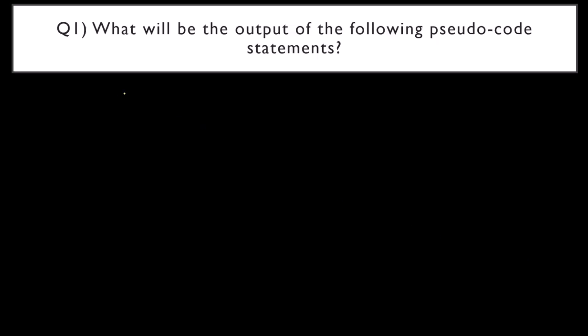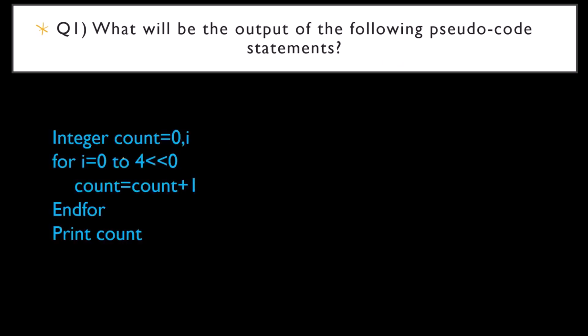The first question that was actually asked in the examination is this: What will be the output of the following pseudocode statements? The given statement is: integer count equals 0, for i equals 0 to 4 less than less than 0, count equals count plus 1, endfor, print count. What will be printed?